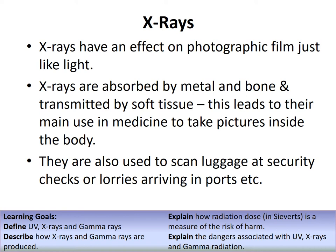Just like light, X-rays affect photographic film, which is how they were originally detected. Modern X-ray machines use electronic CCD (charge-coupled device) detectors, making the process much faster than the old film-development method. X-rays are absorbed by metal and bone but transmitted through soft tissue, making them ideal for medical imaging inside the body. They are also used to scan luggage at security checks and lorries at ports. Very short-wavelength X-rays can also be used in radiotherapy to destroy cancer cells.